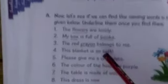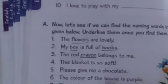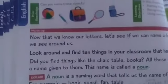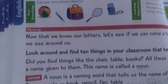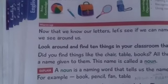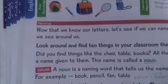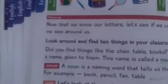Next, try the remaining exercises on your own. In today's lesson, what did we learn? We learnt about nouns. Nouns means a thing's name. Noun is a naming word that tells us the name of things. For example, book, pencil, fan and table — these are called nouns. Okay, children. Thank you.